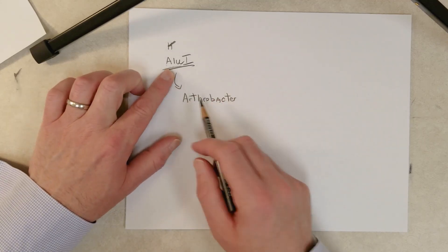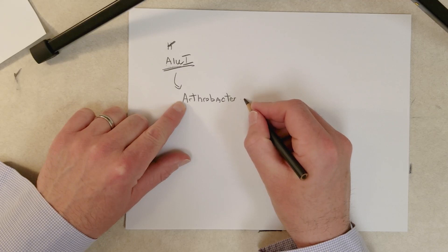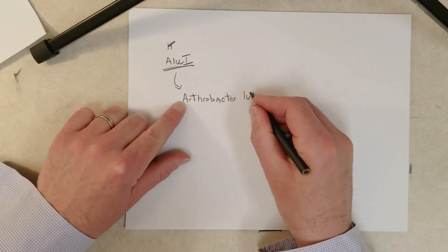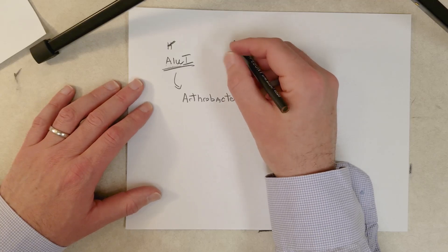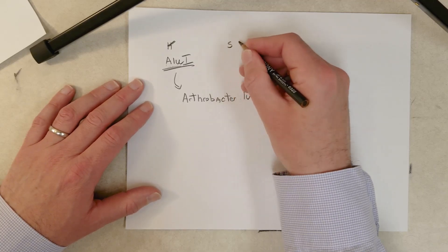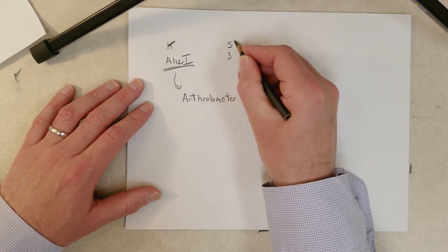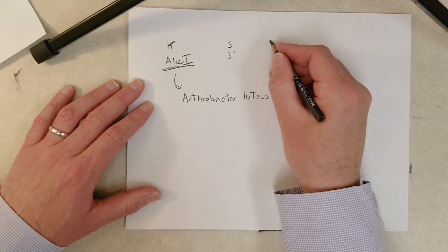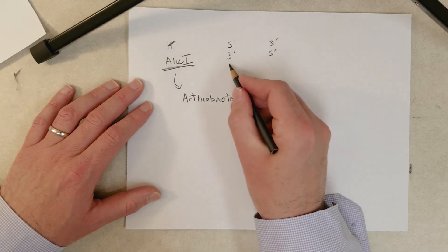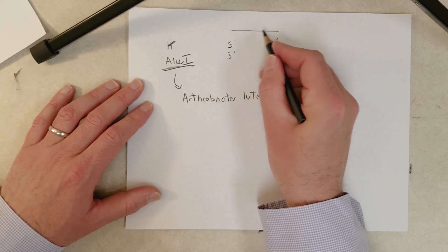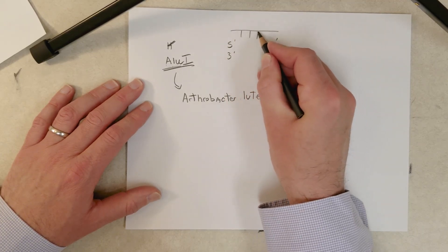So this enzyme was found in bacteria, Arthrobacter luteus. So many different bacteria out there. They probably all have different restriction enzymes. I don't know if all bacteria use restriction enzymes to defend themselves from viruses, but clearly a lot of them do.